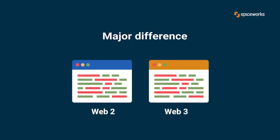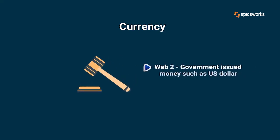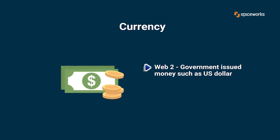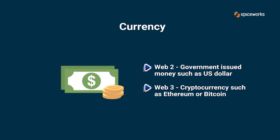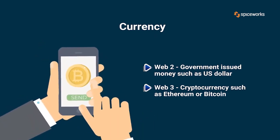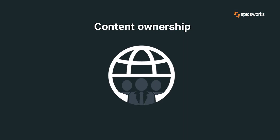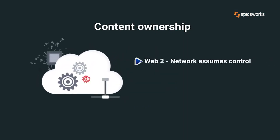Here are the differences between Web 2 and Web 3. Currency: payments on Web 2 are made in fiat money — government-issued money such as the U.S. dollar is used during transactions. Web 3, on the other hand, uses cryptocurrencies such as Ethereum or Bitcoin, which are encrypted digital currencies, to fund transactions.